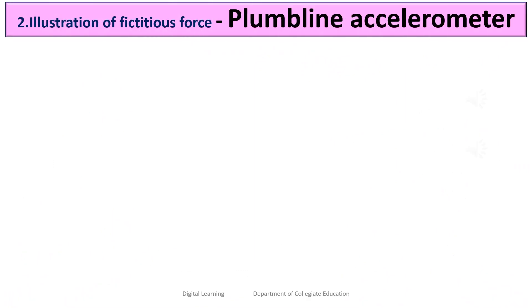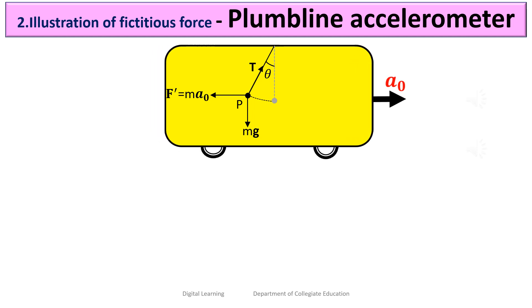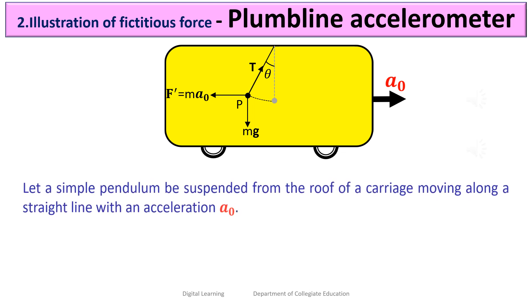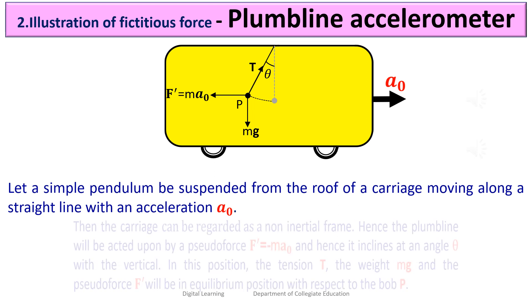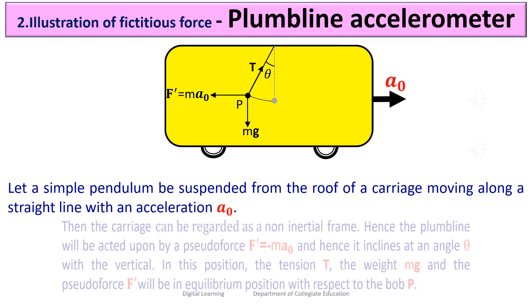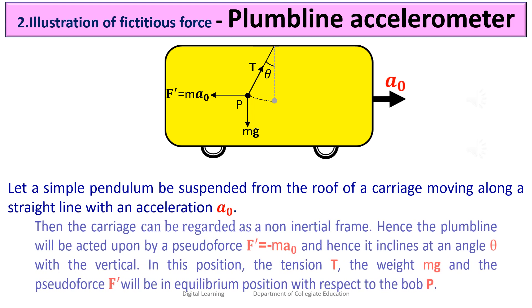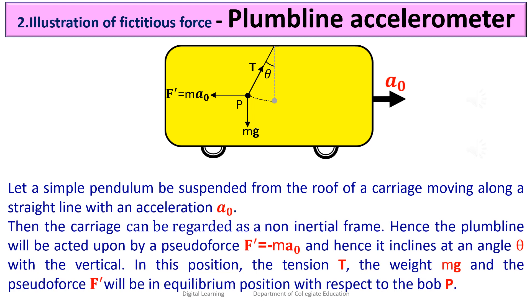Now let us consider one more illustration of fictitious force — a pendulum-based accelerometer. Let a simple pendulum be suspended from the roof of a carriage moving along a straight line with acceleration A0. The carriage can be regarded as a non-inertial frame. Hence, the pendulum will be acted upon by a pseudo force F' = minus mA0, causing it to incline at an angle theta with the vertical. In this position, the tension T, weight mg, and pseudo force F' are in equilibrium with respect to the bob P.